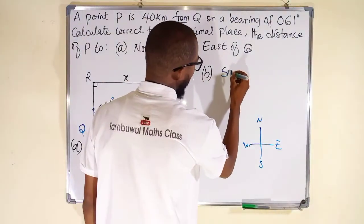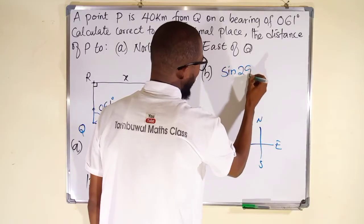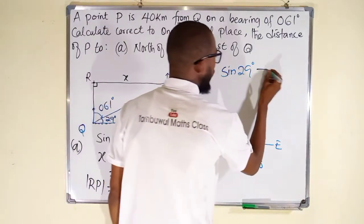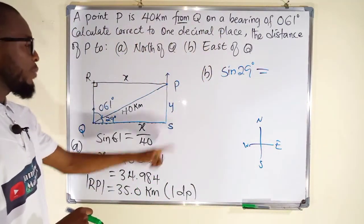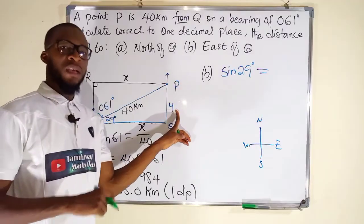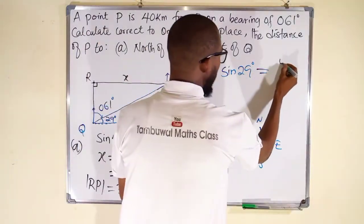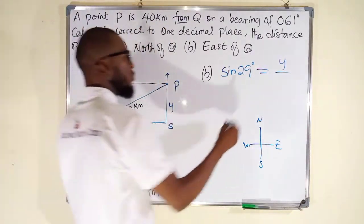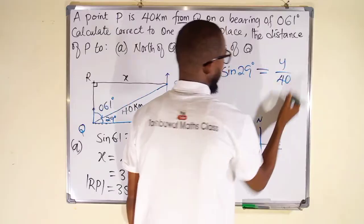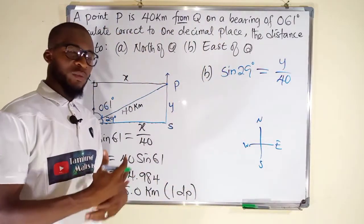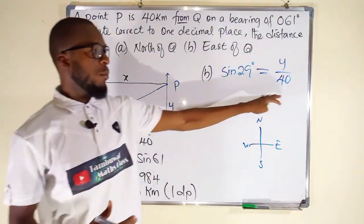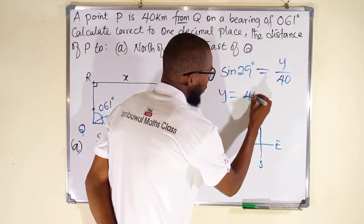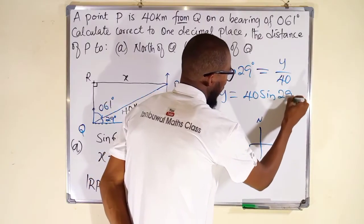So we can say sine 29, which is the angle opposite to the length we are looking for, is equal to opposite divided by hypotenuse. And opposite is the side length we are looking for, which is y. Divide by hypotenuse, which is the longest side. We have it here as 40 kilometers. To make y the subject, we either cross-multiply or we multiply both sides by the denominator of 40. So y alone will be equal to 40 sine 29 degrees.